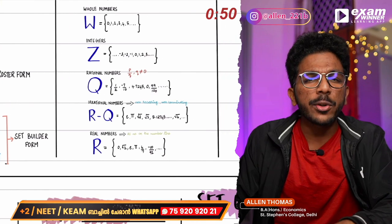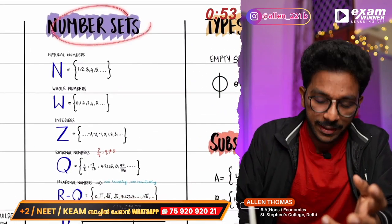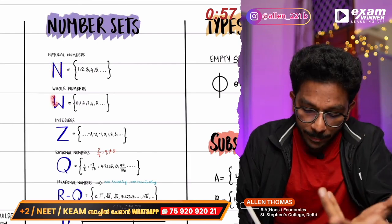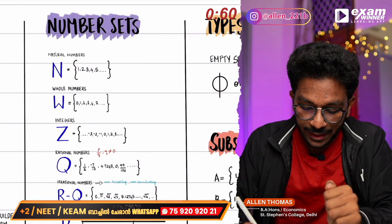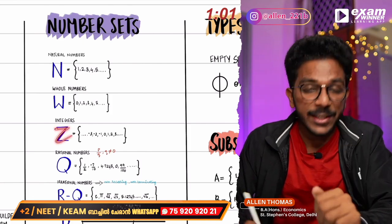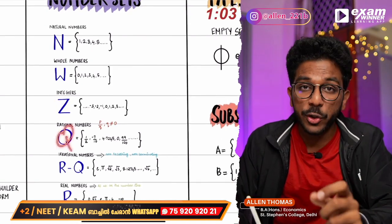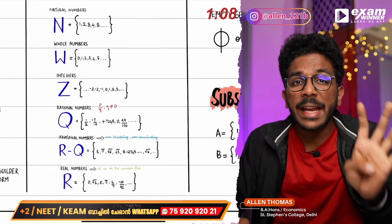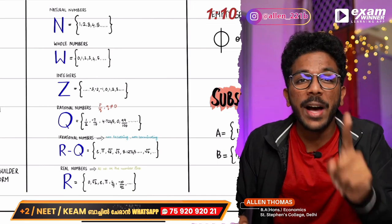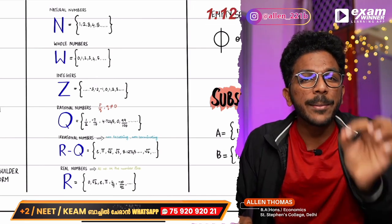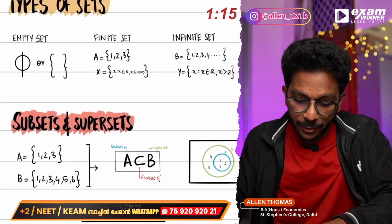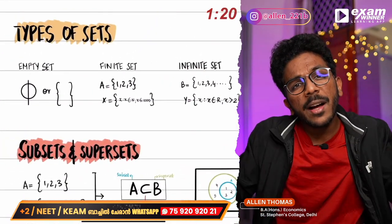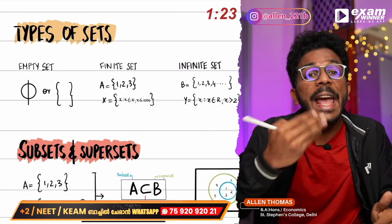The next topic is general types of sets — number sets. The natural numbers are N. The whole numbers are W. Integers are Z. The unit set is R. N, W, Z — the set of real numbers. The whole number types: the sets are finite, infinite, and empty.